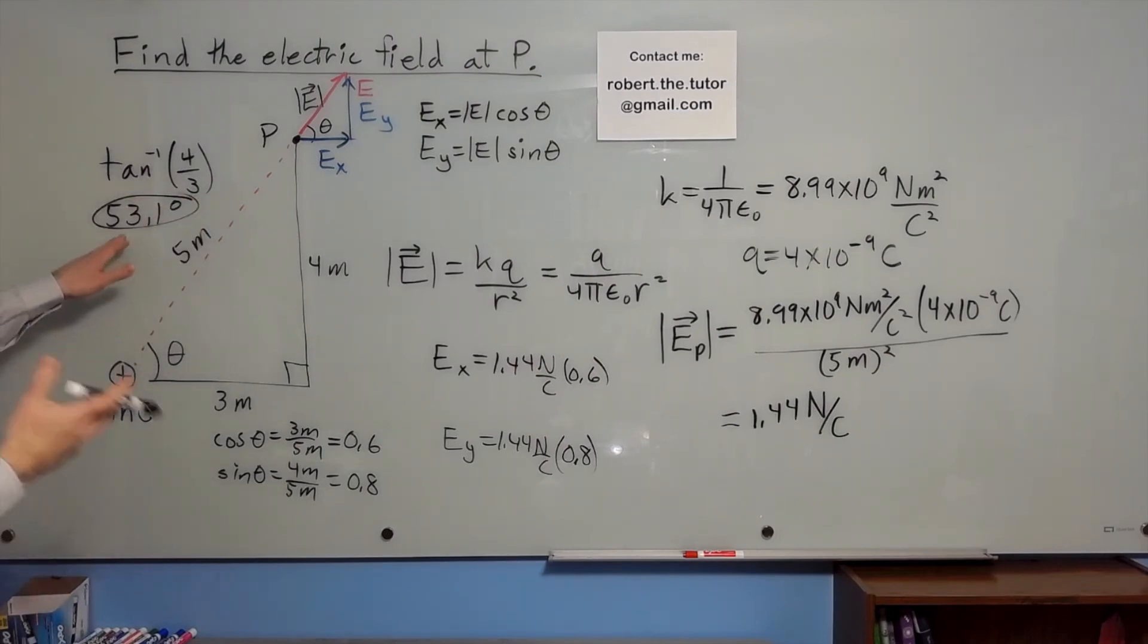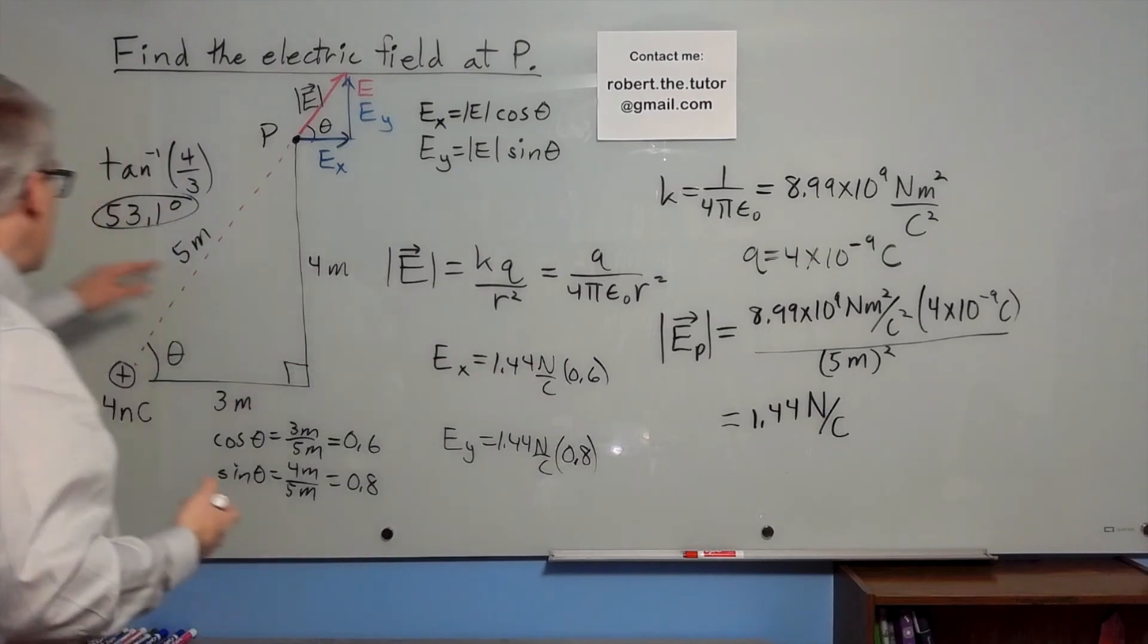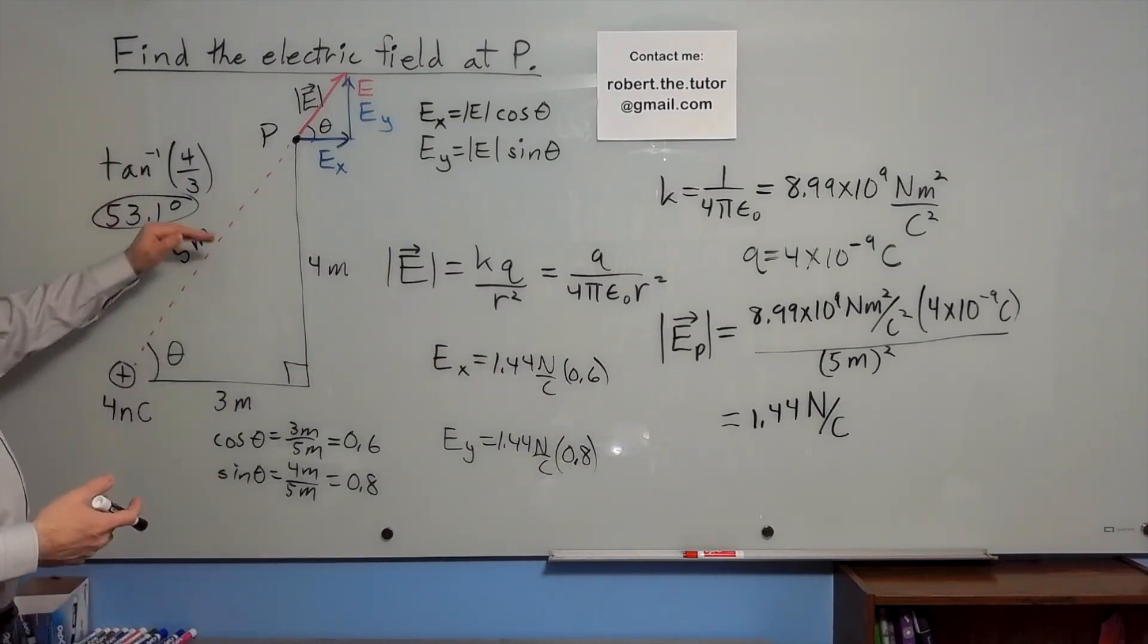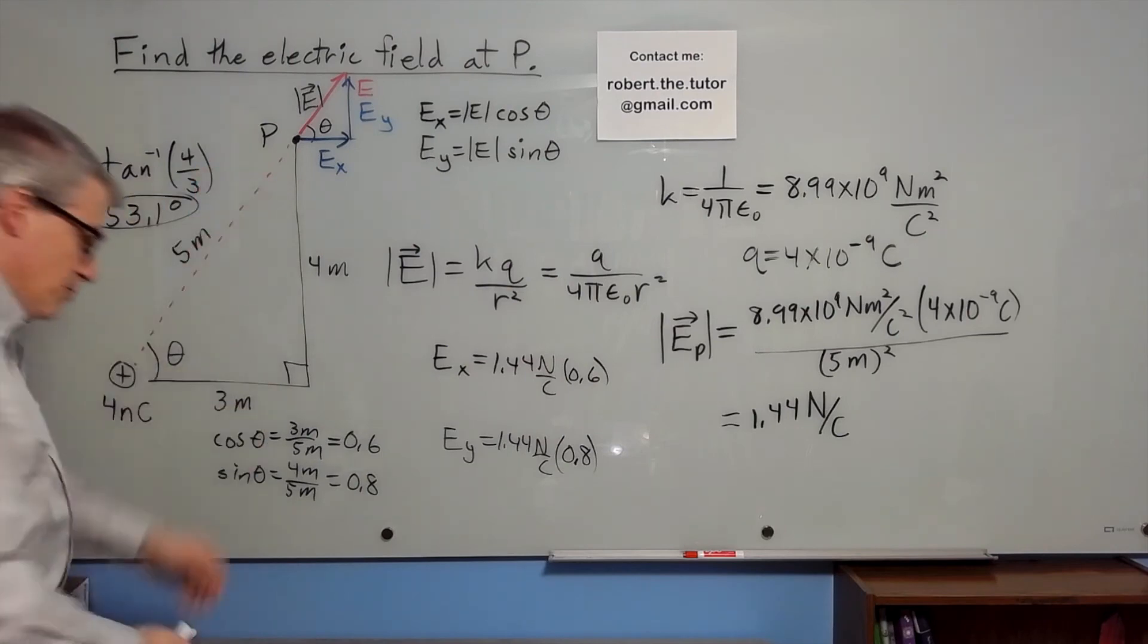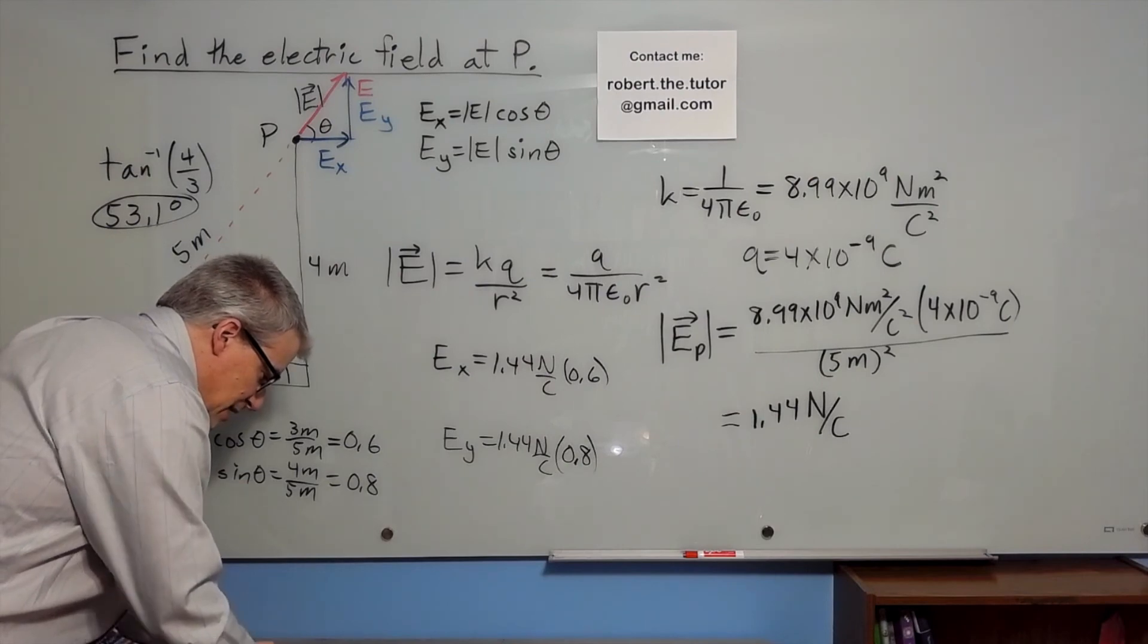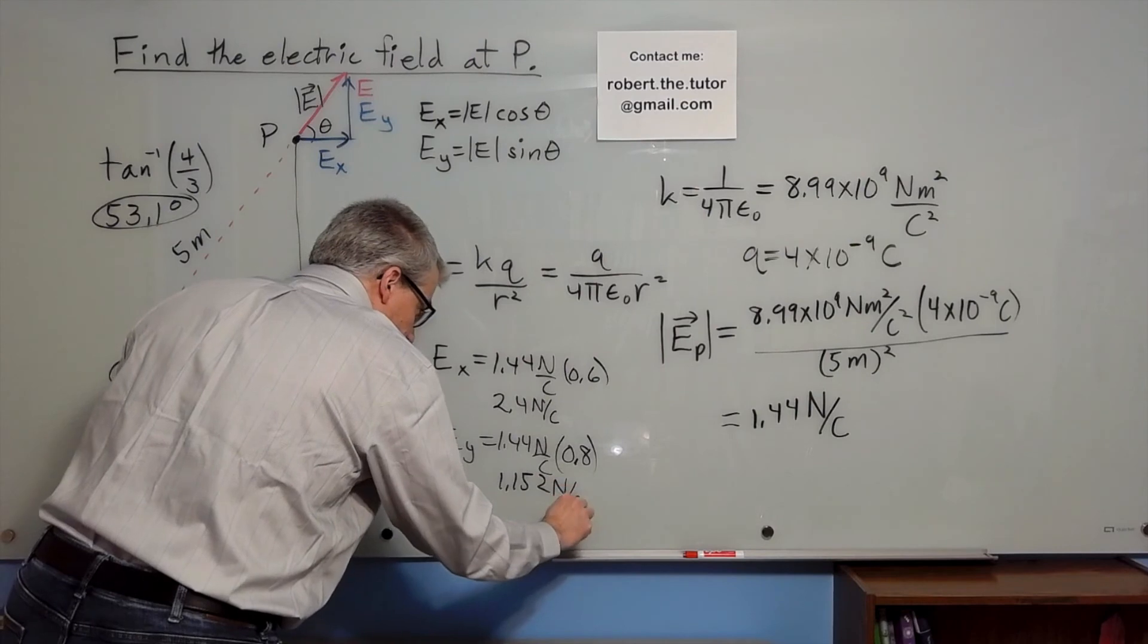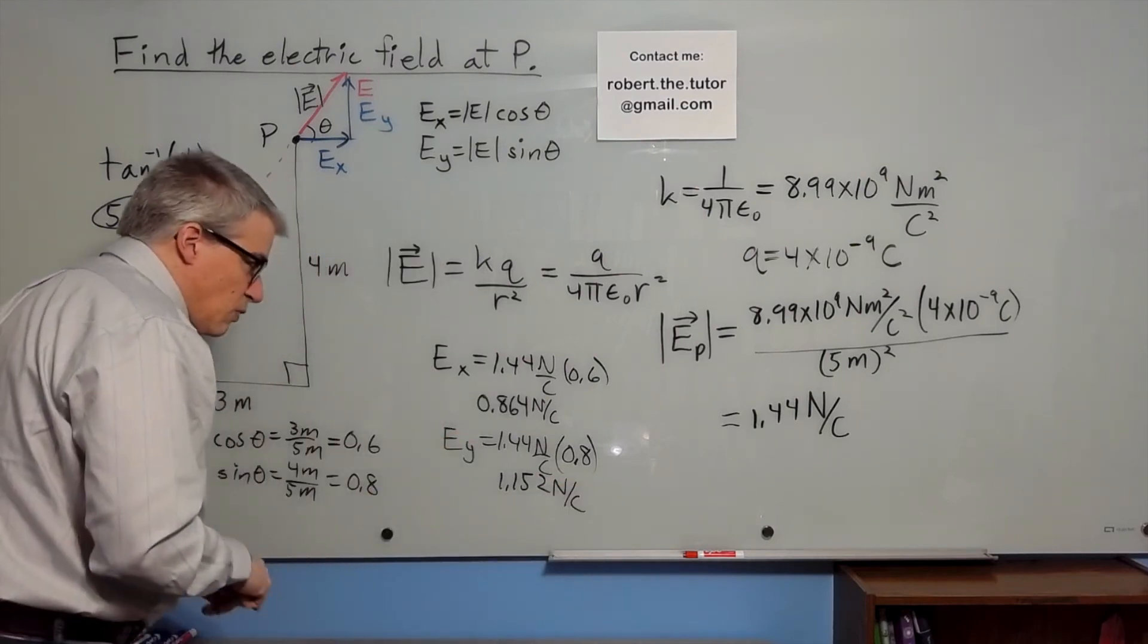So the answer to the problem in terms of magnitude and direction would be 1.44 newtons per coulomb magnitude, a direction of 53.1 degrees above the positive x-axis. Or if you want the components, it would be 1.44 times 0.6, and 1.44 times 0.8, and 1.152 newtons per coulomb, 0.864 newtons per coulomb.